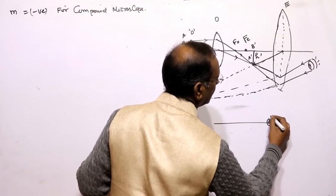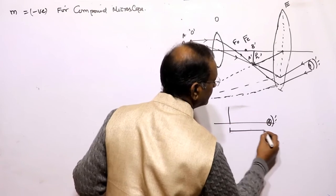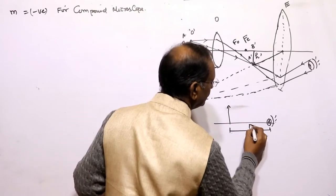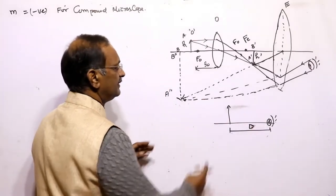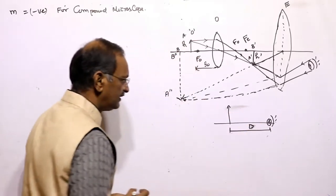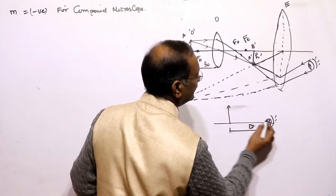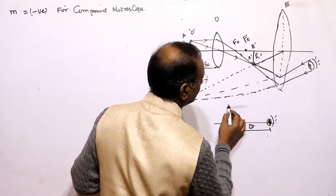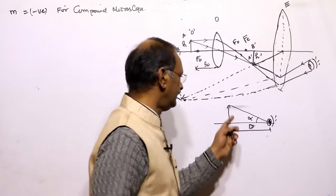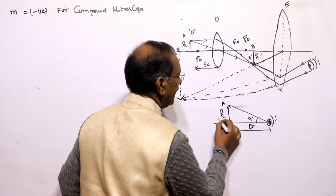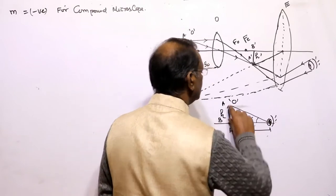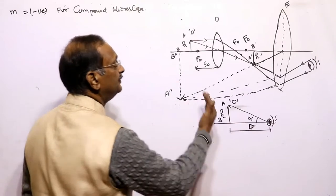When seen by the naked eye, the maximum magnified image is obtained when the object is kept at the least distance of distinct vision. The object can be kept anywhere from infinity up to the least distance of distinct vision, but maximum magnification occurs at the least distance of distinct vision. The angle subtended by the object of height h, kept at the least distance of distinct vision, gives the maximum view.